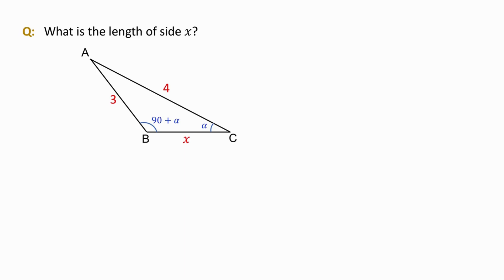Hello, here is today's geometry challenge. We have triangle ABC, where AB is 3, AC is 4, and the angle at B is marked as 90 degrees plus alpha, while the angle at C is alpha. The question is, what is the length of side BC labeled by x?